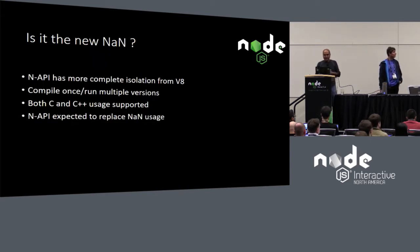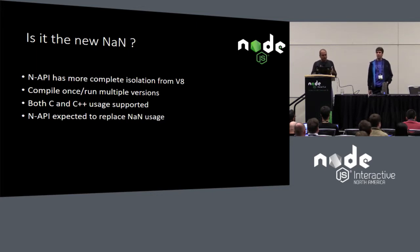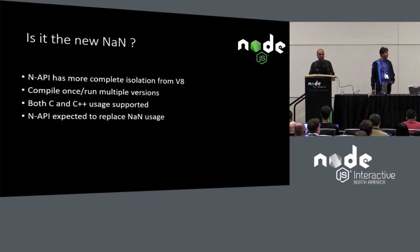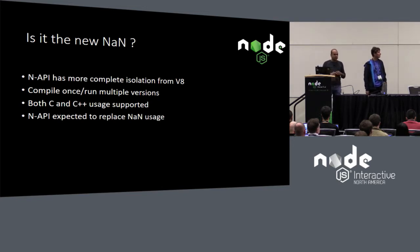A lot of people ask: is NAPI a new NAN? The answer is that it's pretty much the evolution of NAN. NAPI has a more complete isolation from V8. You can compile it once and run it on multiple versions and even flavors. Both C and C++ usage are supported.